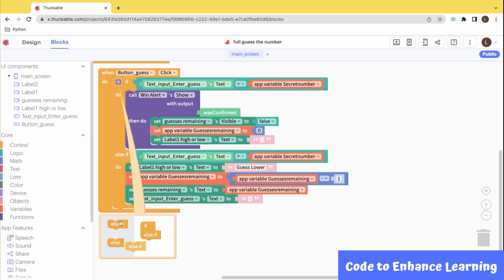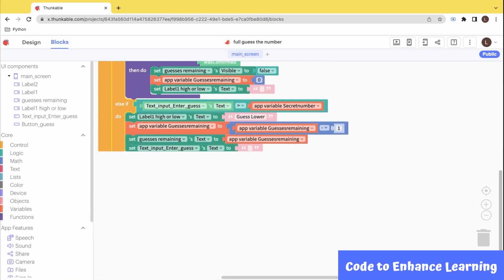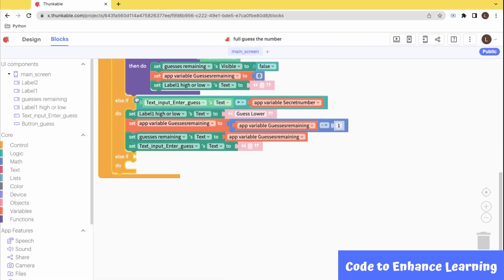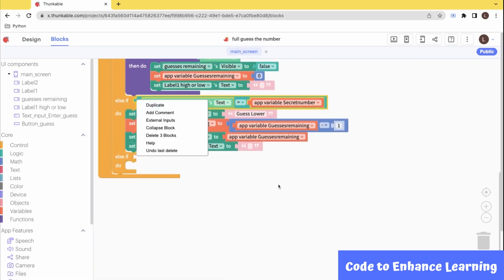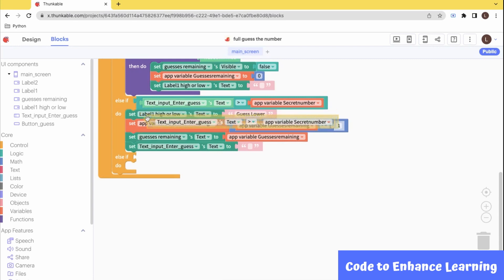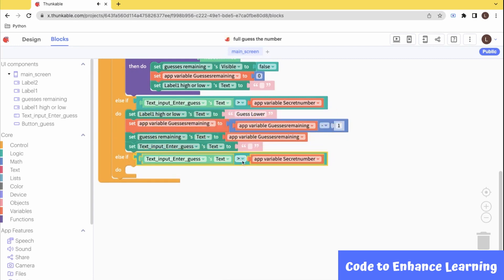Similarly, we can check if the input is lower than the random number. Then we can prompt the player to guess a higher number. The code for this is going to look as below.